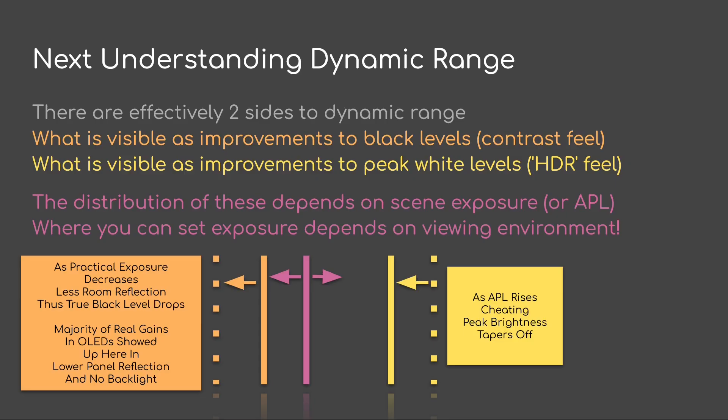The APL, or scene exposure, set by the room background and ambient level, is represented by the purple line. On the right of that we have the yellow line. As APL rises, the cheating peak brightness tapers off of HDR displays. And then on the left side, the dark side, we have the orange line — this would be improvement to black levels. When we are able to decrease exposure, those are environments that have less room reflection, and thus true black level also drops. The majority of real gains in OLEDs showed up here in lower panel reflection and no backlight.